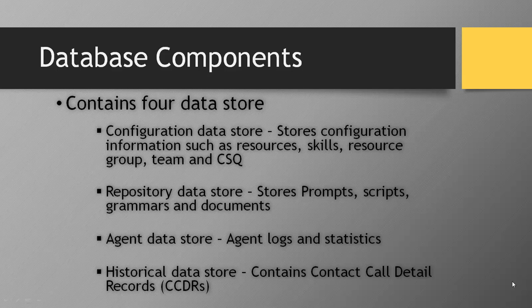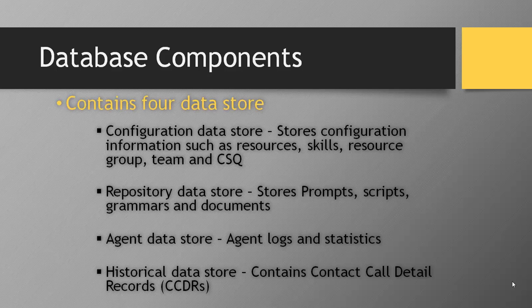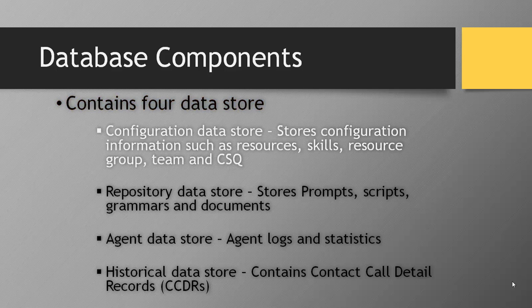Let's take a look at the second software component, which is the database component, consisting of four data stores: the configuration data store, repository data store, agent data store, and historical data store. The configuration data store holds almost all the configuration information in the UCCX, such as resources and agent-related configuration.